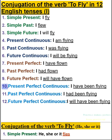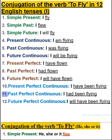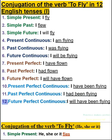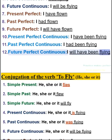10. Present perfect continuous — I have been flying. 11. Past perfect continuous — I had been flying. 12. Future perfect continuous — I will have been flying.